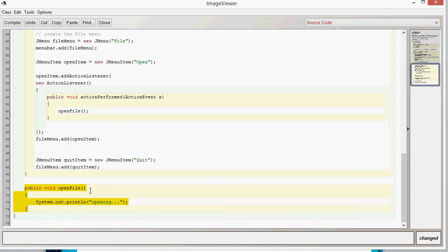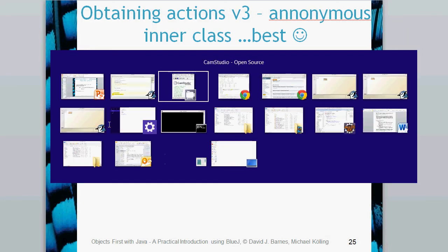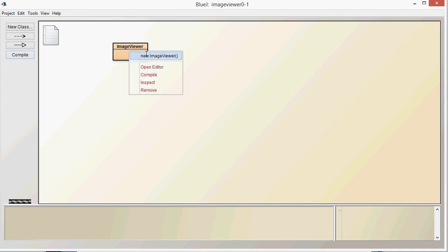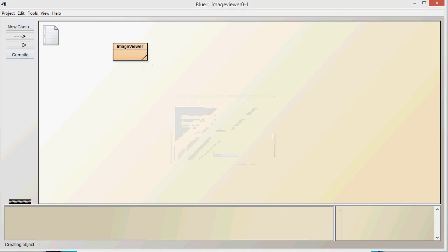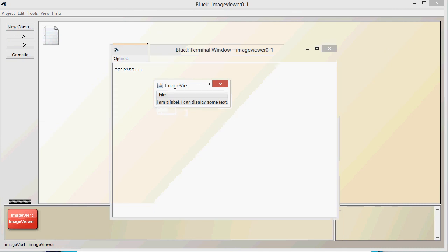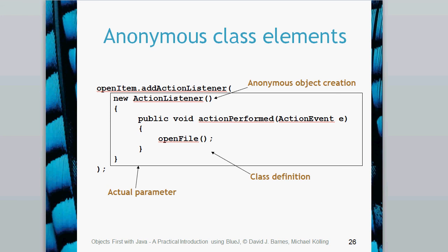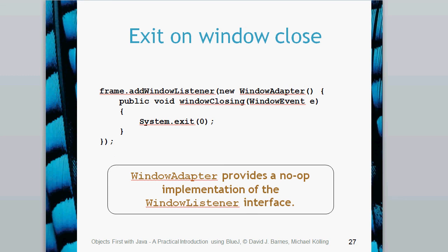Running it, there it goes — that's working. That shows the anonymous inner class, the object creation, the class creation and the actual parameter. Previously we had 'this'; now it's the whole anonymous inner class. Finally, on image viewer version 3, there's an exit class which uses a window event and calls an anonymous inner class to do a system.exit, very similar to using system.out.println from the system class in the API.